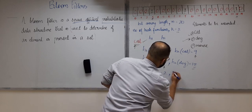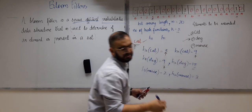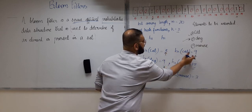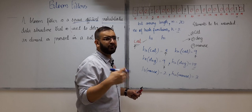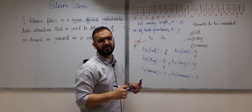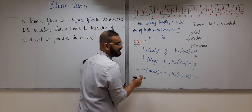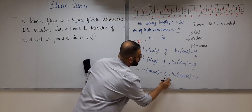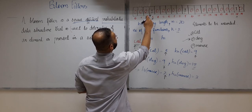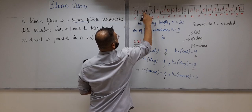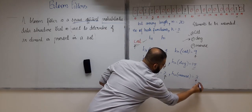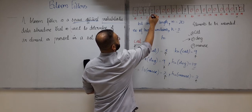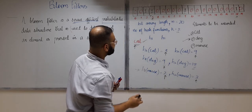Now let's insert the last element 'mouse'. Suppose h1(mouse)=2 and h2(mouse)=3. These are random example values — what matters is the final hash values, not how they are computed. We go to index 2 and ensure the bit is 1; it is 0 so we change it to 1. Then we go to index 3 — the bit there is already 1, so it remains 1. Mouse has been inserted.